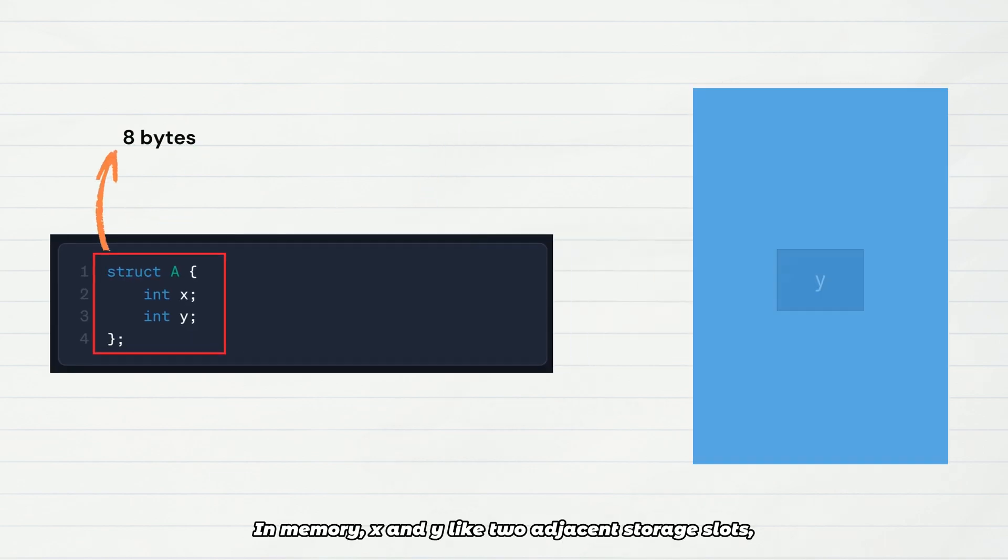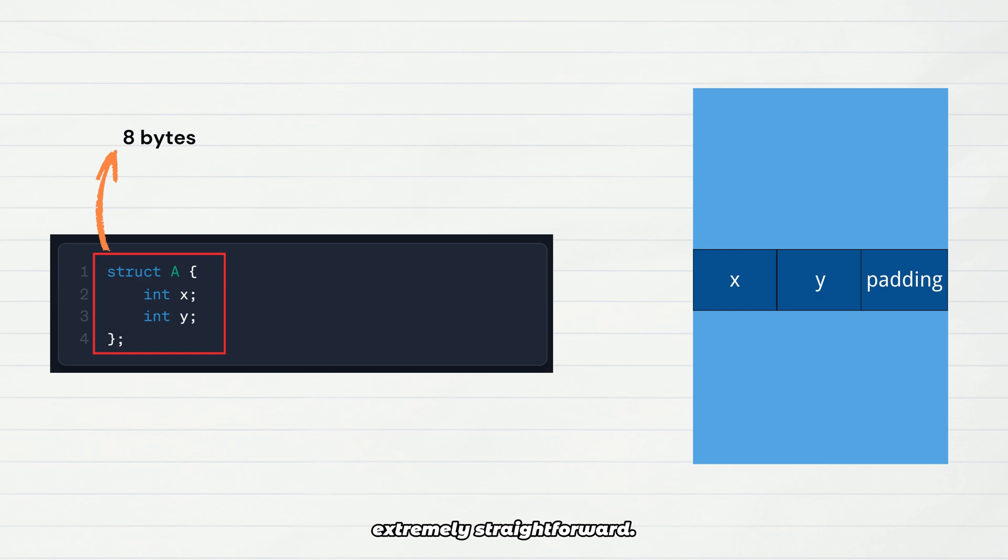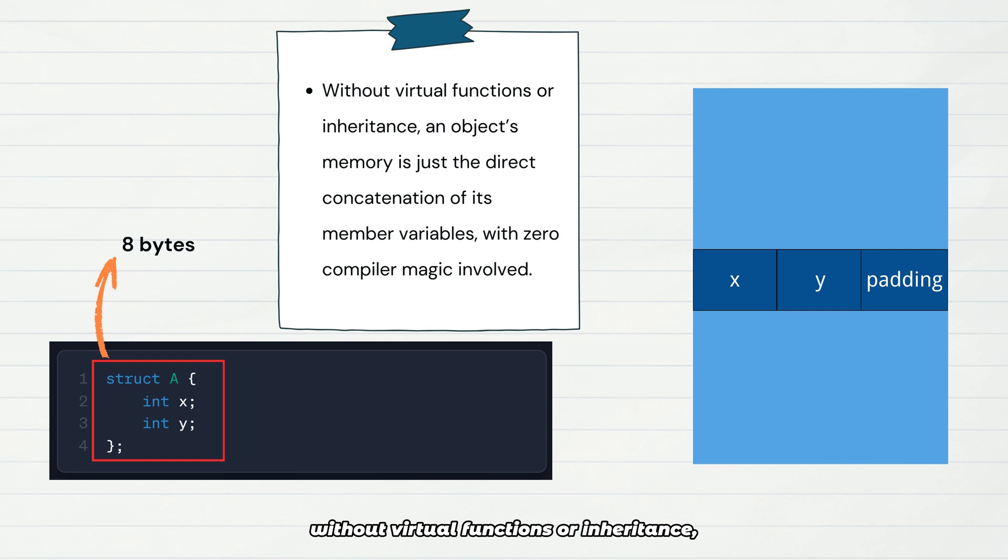In memory, x and y are like two adjacent storage slots, extremely straightforward. The key takeaway here is: without virtual functions or inheritance, an object's memory is just the direct concatenation of its member variables, with zero compiler magic involved.